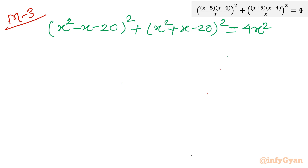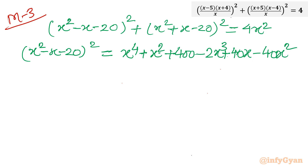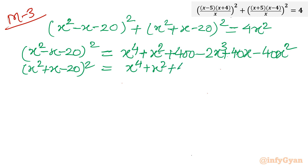Expanding (x squared minus x minus 20) whole squared using the formula: x to the 4th plus x squared plus 400 minus 2x cubed plus 40x minus 40x squared. Similarly, expanding (x squared plus x minus 20) whole squared gives x to the 4th plus x squared plus 400 plus 2x cubed minus 40x minus 40x squared.